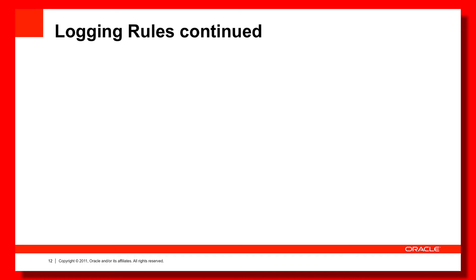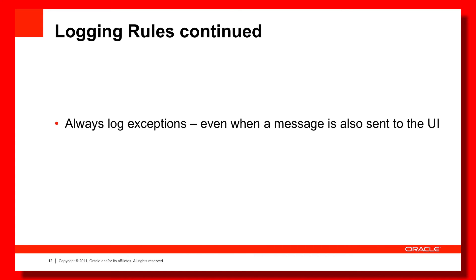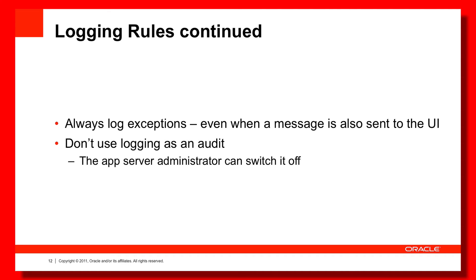If the framework or your application raises an exception, always log the exception even if it's reported up to the user. Otherwise if a user comes back to report an exception, you won't be able to find it in the logs to correlate with what they're telling you. Also, don't use logging as an audit — if auditors require tracking what users were doing, relying on logs is insufficient because server administrators can simply turn logging off.